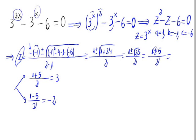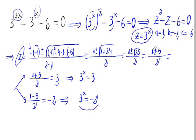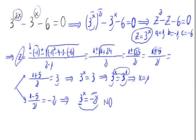These are the values for z, but we want to find the value of x. So let's substitute z back. The first solution gives us 3 raised to 2x equal to 3. The second solution gives us 3 raised to 2x equal to minus 2. From the second solution, we have a positive base raised to a power equaling a negative number — that is impossible, so we cannot obtain any solution from there. From the first solution, 3 raised to 2x equals 3, which is the same as 3 raised to 1, so we can make the exponents equal and obtain x equals 1.